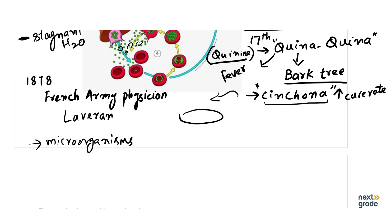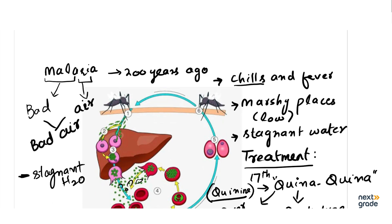اس کی بات کو کسی نے نہیں مانا اور وہ اپنی زندگی گزار کے چلا گیا۔ ابھی تک کے لیے اتنا mind میں رکھنا ہے کہ malaria meaning ہے bad air — اور اس کی reason یہ سمجھی جاتی تھی کہ کھڑے ہوئے گندے پانی کی وجہ سے ہوا گندی ہو جاتی ہے جس سے malaria ہوتا ہے۔ اب next lecture میں دیکھتے ہیں کہ اس کا further کیا development ہوا۔